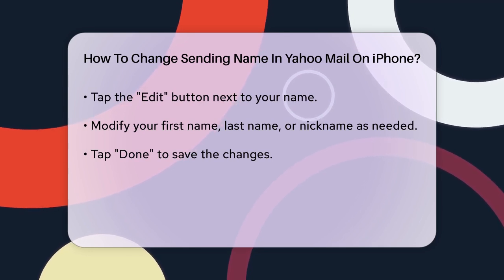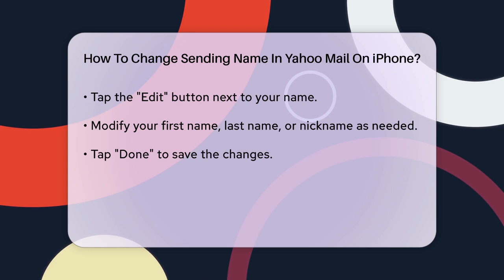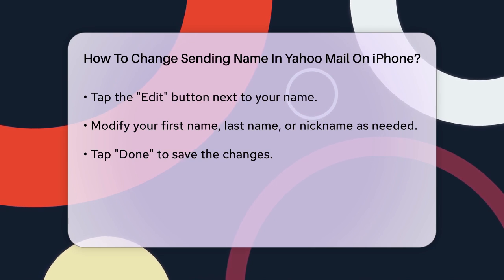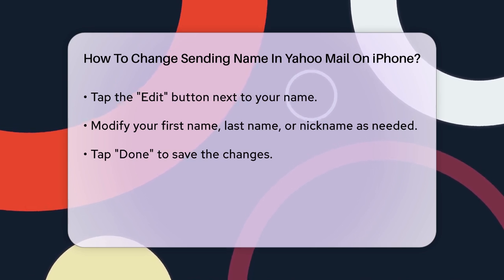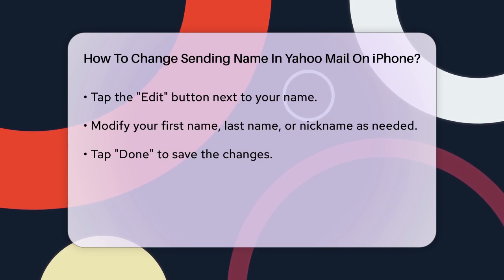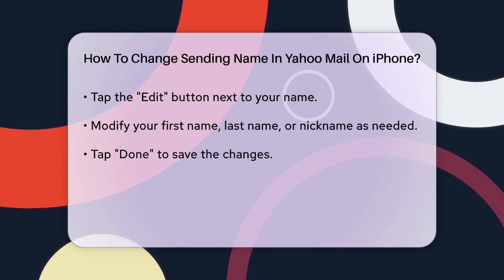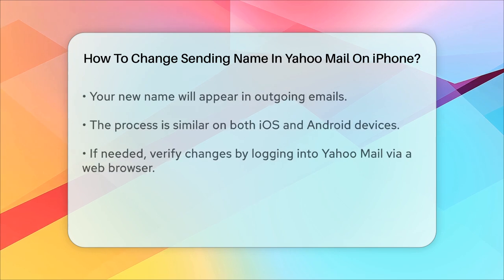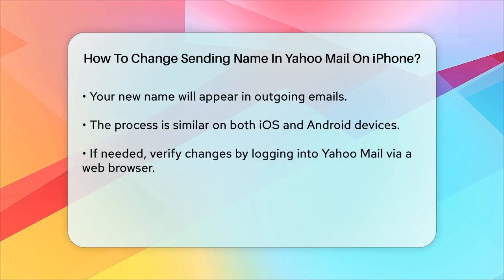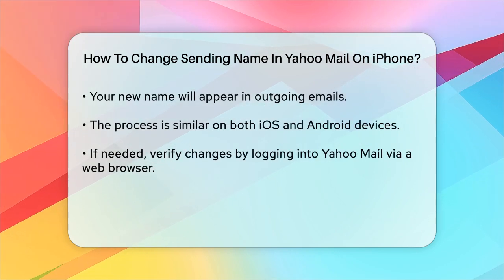That's it. Your new name will now appear when you send emails from your Yahoo Mail account on your iPhone. This process is similar whether you're using an iOS or Android device, so you don't need to worry if you switch between different types of devices. Just follow these steps and you'll be all set.